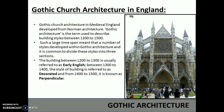Now we shall study about Gothic church architecture in England. Gothic church architecture in medieval England developed from Norman architecture. Gothic architecture is the term used to describe building styles between 1200 to 1500. Such a large time span meant that a number of styles developed within Gothic architecture, and it is common to divide these styles into three sections.